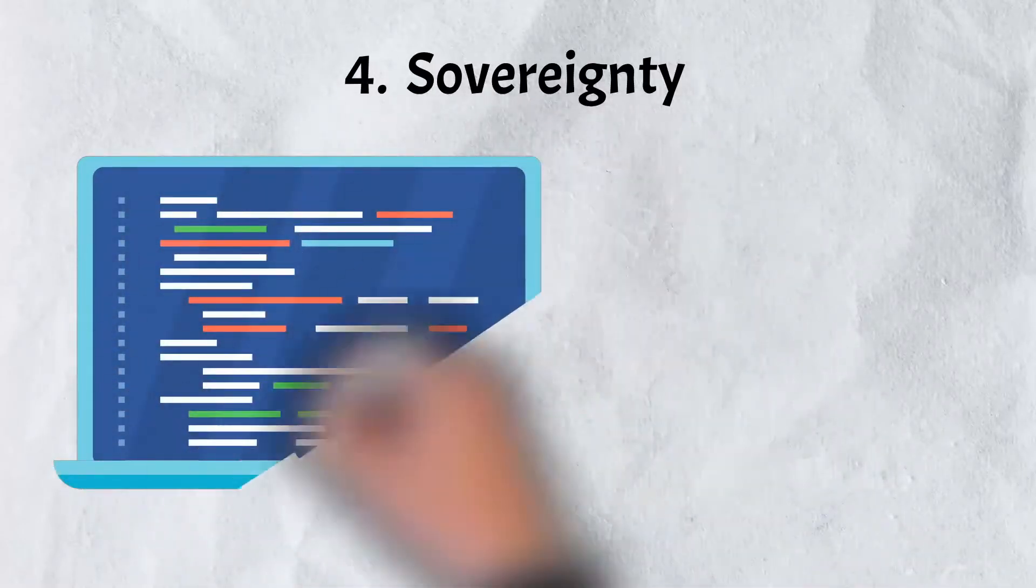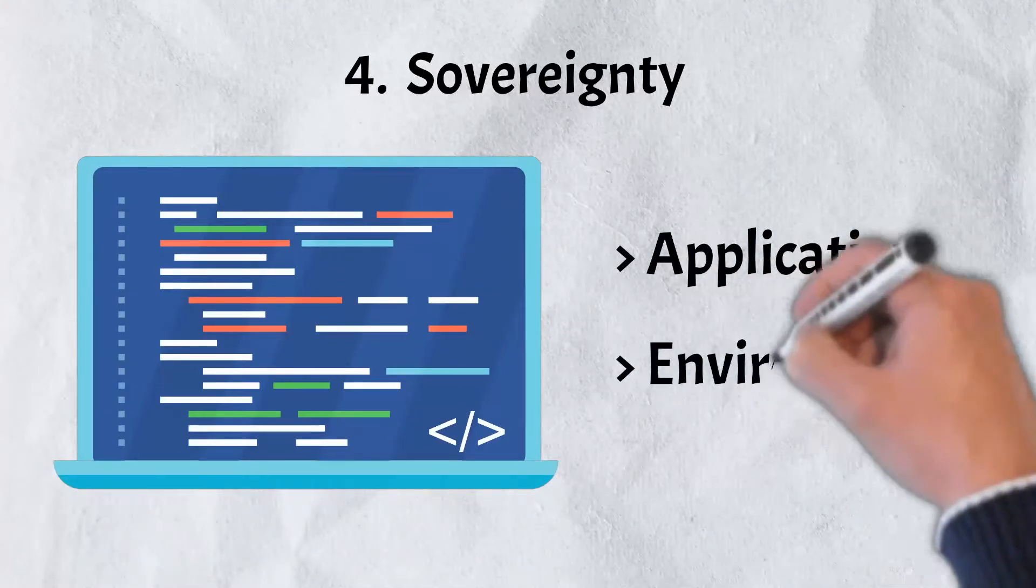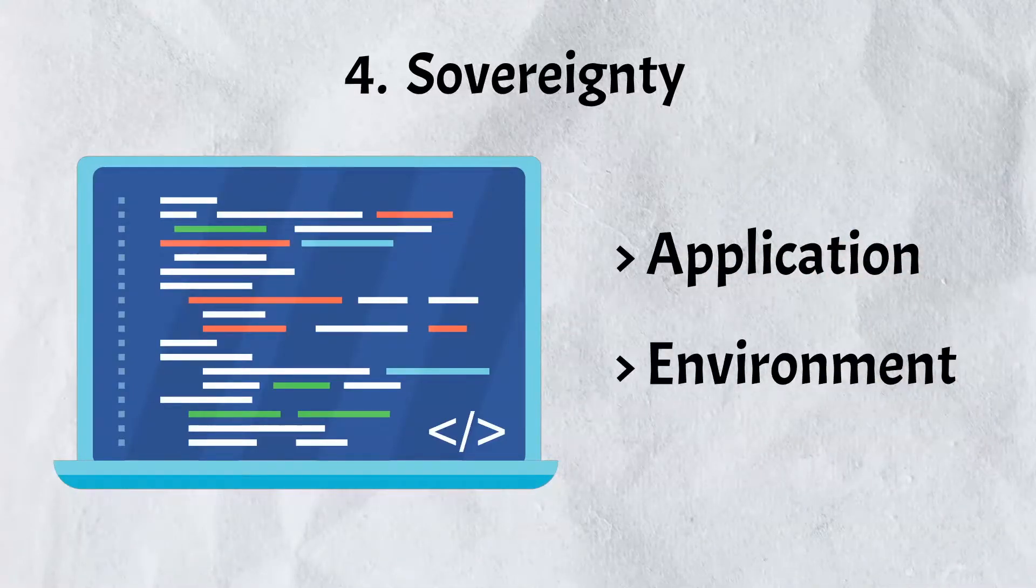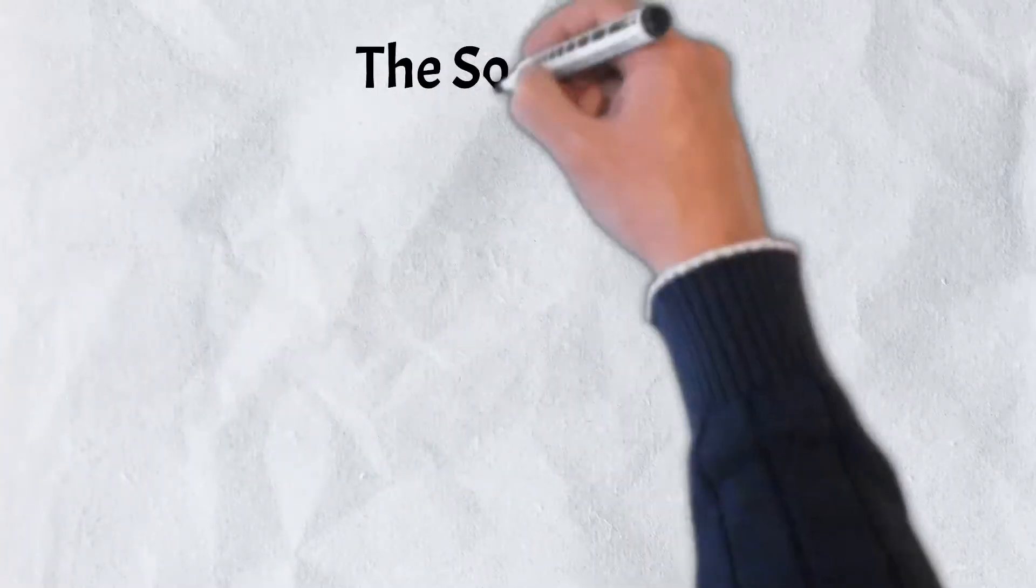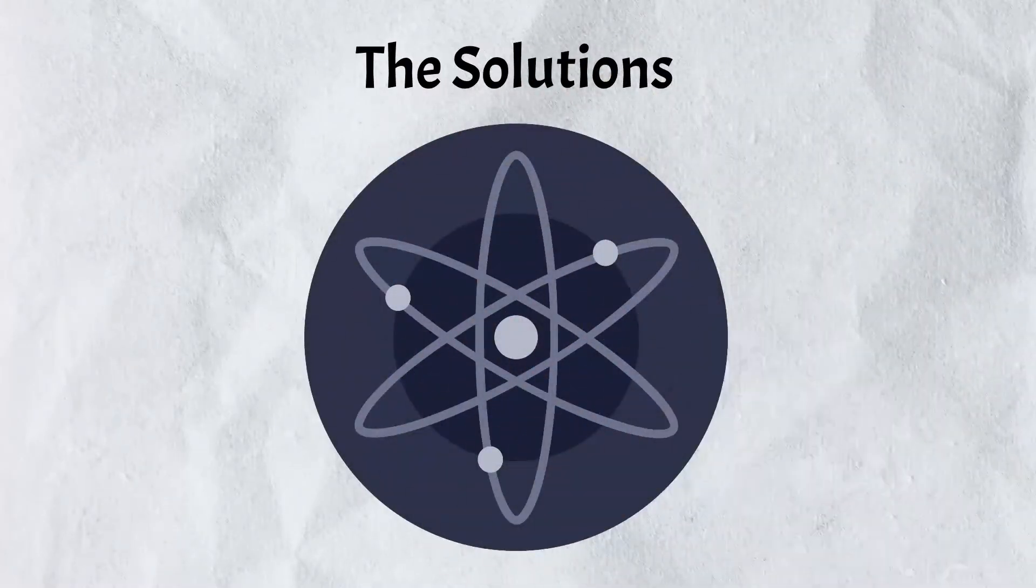And last, is sovereignty. Because applications share the same underlying environment, their sovereignty is constrained. There are two levels of governance, the application level, and the underlying environment level. The application level is restricted by the underlying environment level. Now that you know what the problems are, let's take a look at how Cosmos hopes to resolve them.